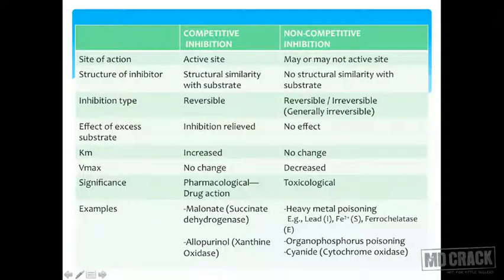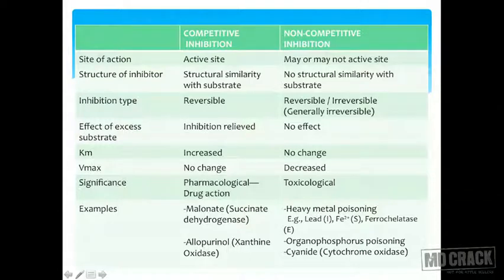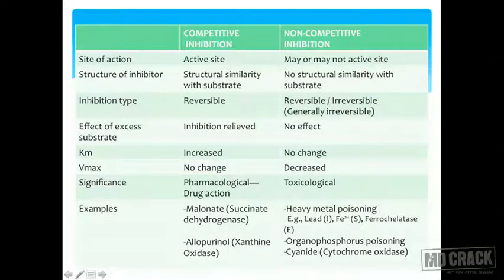Here is a comparison table of competitive versus non-competitive inhibition. In competitive inhibition, the site of action is the active site; in non-competitive it may or may not be the active site. The inhibitor structure is a substrate analog in competitive, but not in non-competitive. Competitive inhibition is usually reversible; non-competitive is generally irreversible. Excess substrate relieves competitive inhibition but has no effect in non-competitive. KM is increased in competitive with no change in Vmax; in non-competitive KM is unchanged but Vmax is decreased. Competitive inhibition is significant in pharmacological drug actions (e.g., succinate dehydrogenase/malonate, allopurinol/xanthine oxidase). Non-competitive examples include heavy metal poisoning (lead inhibiting ferrochelatase), organophosphorus poisoning, and cyanide inhibiting cytochrome oxidase.